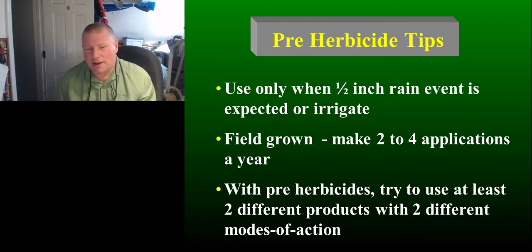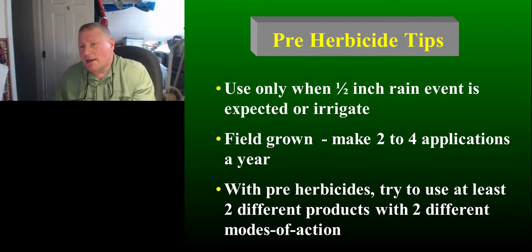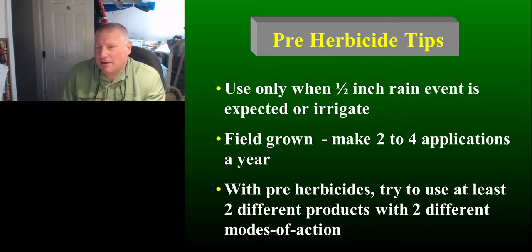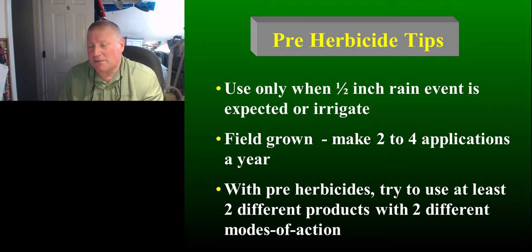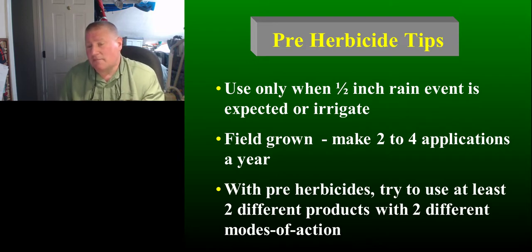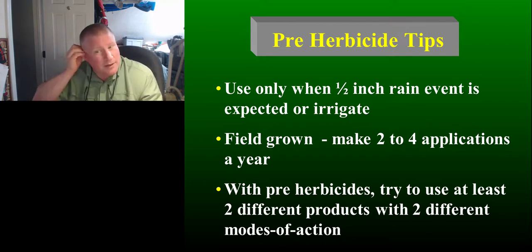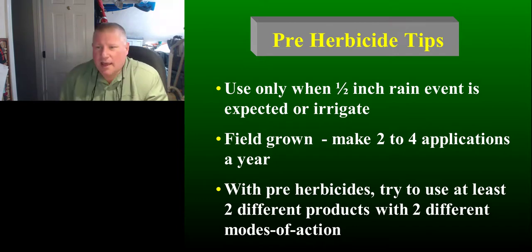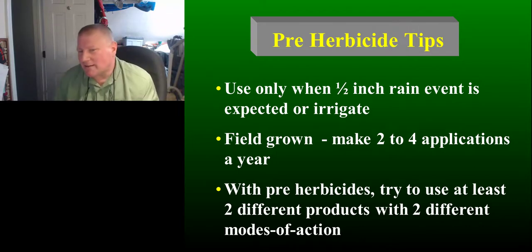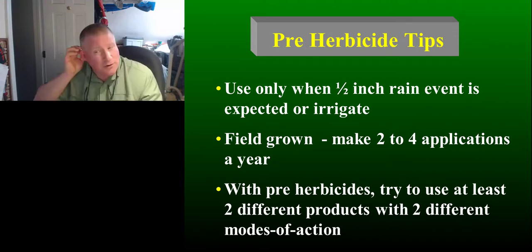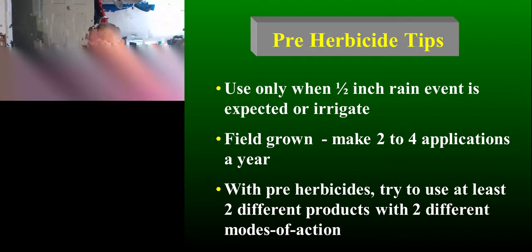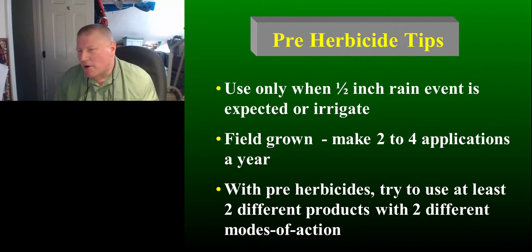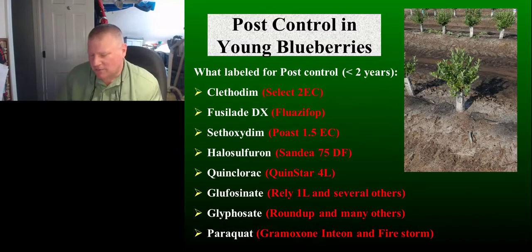I just contacted the rep at Syngenta and it shouldn't be a problem to get this as a Section 24c. Michigan and North Carolina already have one. Now that we're not going to have Surflam, Dual Magnum is going to be the go-to product. A couple of things about using pre-emergent herbicides: you need a rain event or irrigation event to activate the product — that's standard with all pre-emergents. I recommend tank mixing products, particularly with weaker products like Gallery, Dual, Oryzalin, and Simazine, to get broader spectrum weed control. That's why you use two different products with two different modes of action.